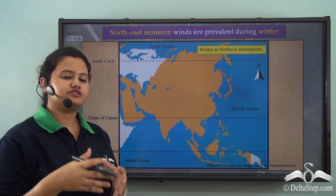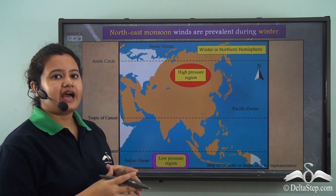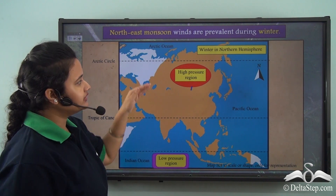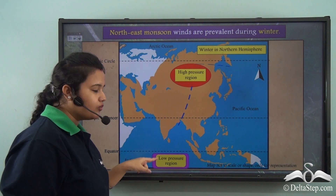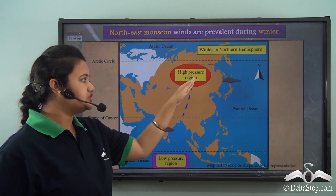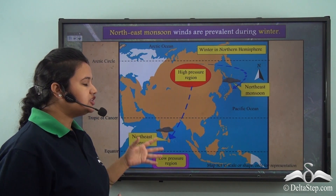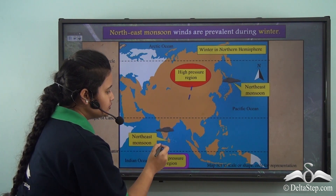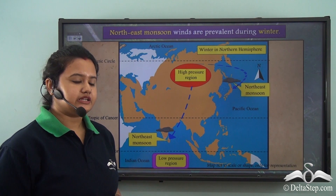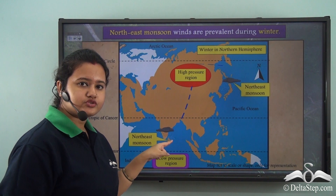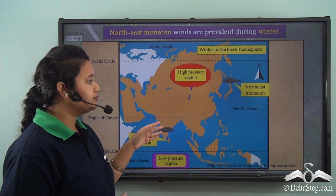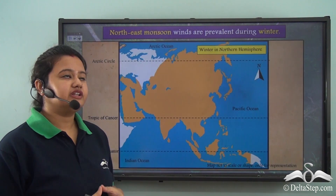During winter, the conditions get reversed. Land masses have comparatively lower temperatures than the adjoining water bodies, so high pressure prevails over the land while low pressure prevails over the water bodies. The winds therefore leave the Asian subcontinent and blow towards the Indian Ocean. Initially these winds blow from land to sea and are dry, but as they cross the water bodies they become moisture-laden and cause rainfall in some parts of Asia like the southeastern coast of India and the coast of Japan. These are known as northeast trade winds, as they blow in the northeast direction, and they are mostly prevalent during winter.